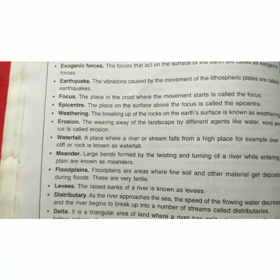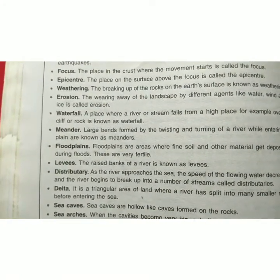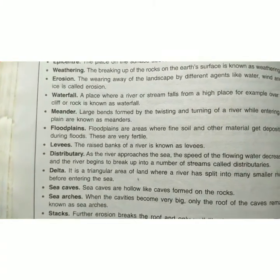Meander — large bends formed by the twisting and turning of a river while entering a plain are known as meanders. Floodplains are areas where fine soils and other material get deposited during floods. These are very fertile, and alluvial soil is usually found in this kind of plain.